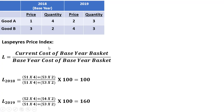The Laspeyres price index can be thought of as the current cost of the base year basket divided by the base year cost of the base year basket. So in 2018, the Laspeyres index will use the current prices of $1 and $3, multiplied by the base year basket, which is 4 and 2 respectively. So that is in the numerator: 1 times 4 plus 3 times 2.